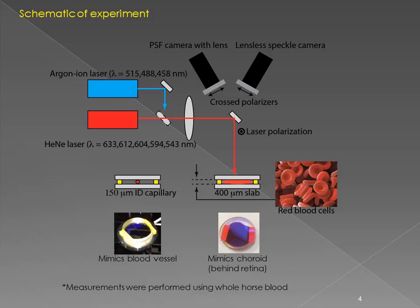The experiment is rather simple. We have two lasers, an argon and a helium-neon, which allow us to shine eight wavelengths independently, one at a time, onto a slab of blood. We then look at the speckle with a camera that does not have a lens, and we look at the blood point spread function with a camera that does have a lens to image the pattern. Both cameras have cross polarizers, and all measurements reported in this talk are made under conditions of cross polarization. The sample holder is two large pieces of glass with horse blood and 400 micron spacers to mimic the correlate.